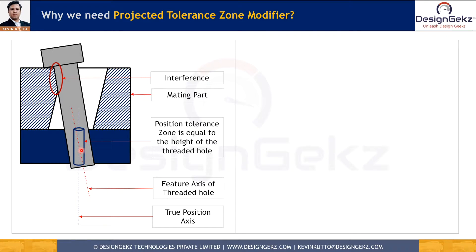If the upper part thickness is less than the lower part thickness, and we control both upper and lower hole tolerance of position or perpendicularity tolerance zones by calculating the tolerance value using the fixed fastener formula, the parts should assemble nicely without any interference. The problem occurs when the upper part thickness is more than the lower part thickness and the tolerance of position or perpendicularity are controlled individually. Because of the height of the upper part, it adds to the orientation of the bolt.